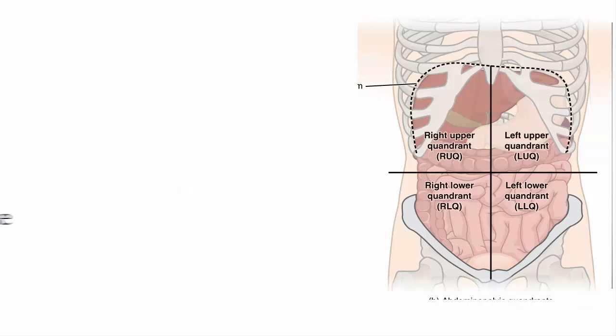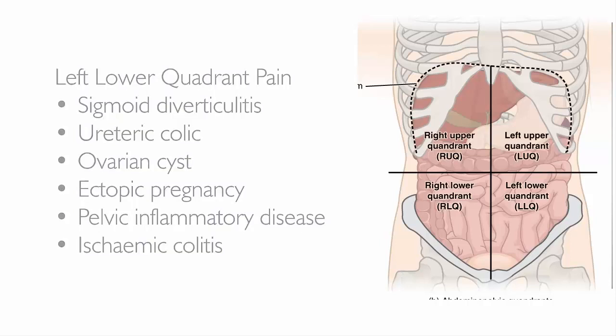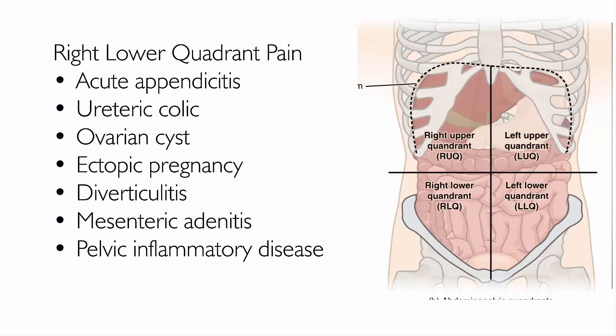Left lower quadrant pain can be caused by sigmoid diverticulitis, ureteric colic, ovarian cyst, ectopic pregnancy, pelvic inflammatory disease, or ischemic colitis. Right lower quadrant pain can be caused by acute appendicitis, ureteric colic, ovarian cyst, ectopic pregnancy, diverticulitis, mesenteric adenitis, or pelvic inflammatory disease.